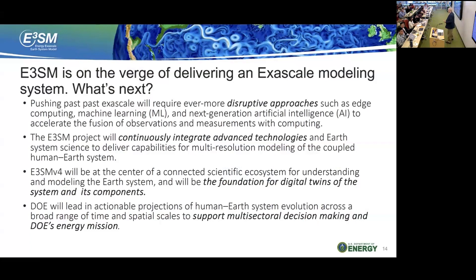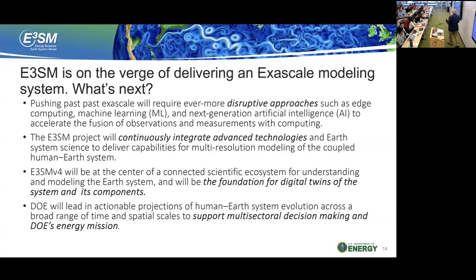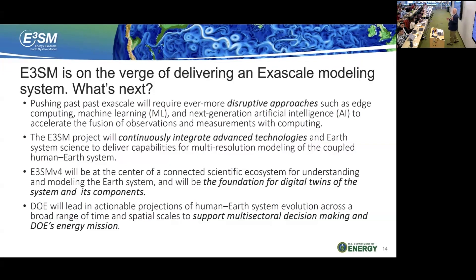Where do we go from here? We've been around just 10 years, which is old for a DOE project. We're going to have to push past even exascale. Machine learning is a big thing — we had a meeting last week talking about how machine learning fits into our climate models, and things are moving so fast that the conversation today is different from two weeks ago. One thing we need to realize: machine learning and AI are all based on data. They can't do a prediction of something that has not been observed, so there will always be a place for a physical model.